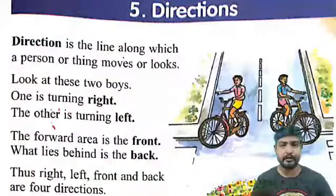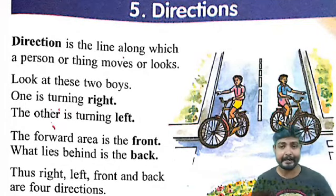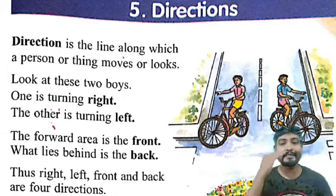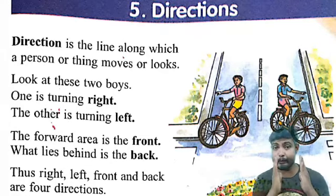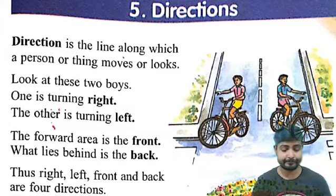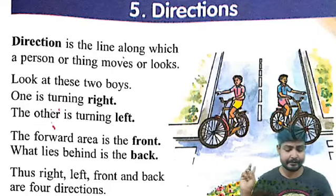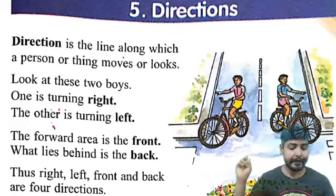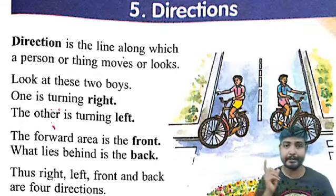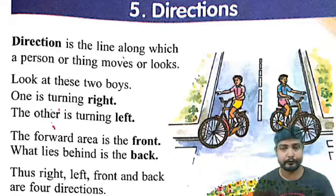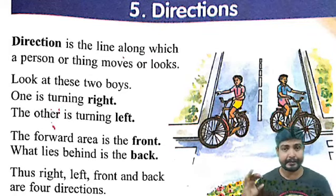Direction is the line along which a person or thing moves or looks. If we look at those two boys, one is turning right and the other is turning left. In the picture, two boys are riding cycles — one going right and one going left.